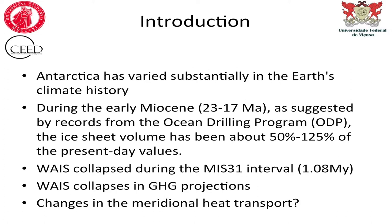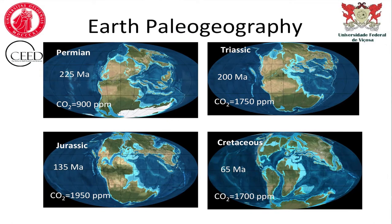That's why we can move a little bit back to try to understand the future, like some global warming associations. The point I explored here is that Antarctica has varied substantially in climate history. For instance, during the Miocene, changes in the Antarctic ice sheet changed from 50% to 155% compared to present-day values. Marine Isotope Stage 31 had a complete collapse of the West Antarctic ice sheet. This change may induce substantial change in the marine heat transport in the ocean due to the change in deep water formation.